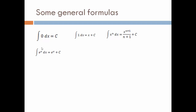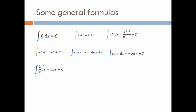The anti-derivative of e^x dx is e^x + c, since the differentiation of e^x is e^x, so the anti-derivative is also e^x, with only the addition of a constant. Then: ∫cos(x) dx = sin(x) + c; ∫sin(x) dx = −cos(x) + c; ∫(1/x) dx = ln(x) + c; ∫n^x dx = n^x / log(n) + c.